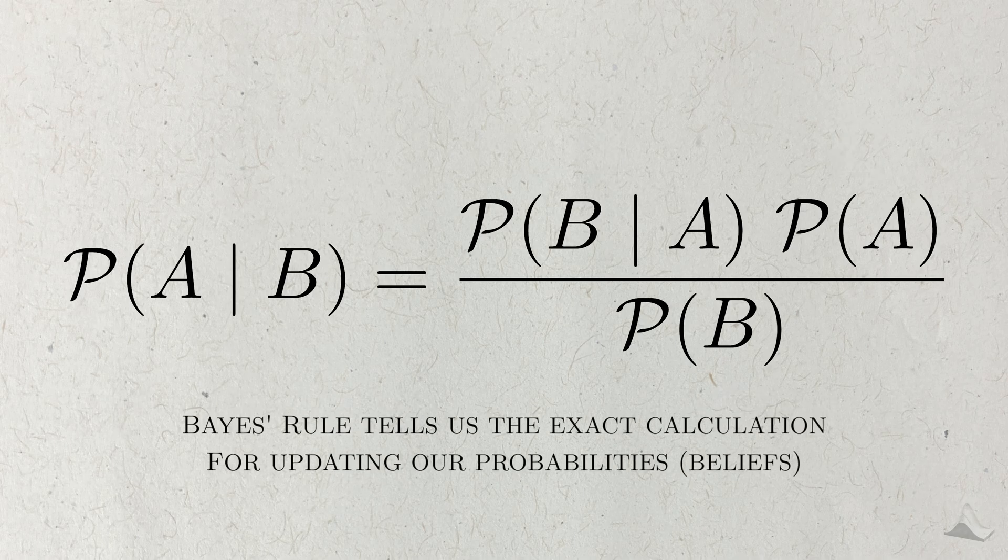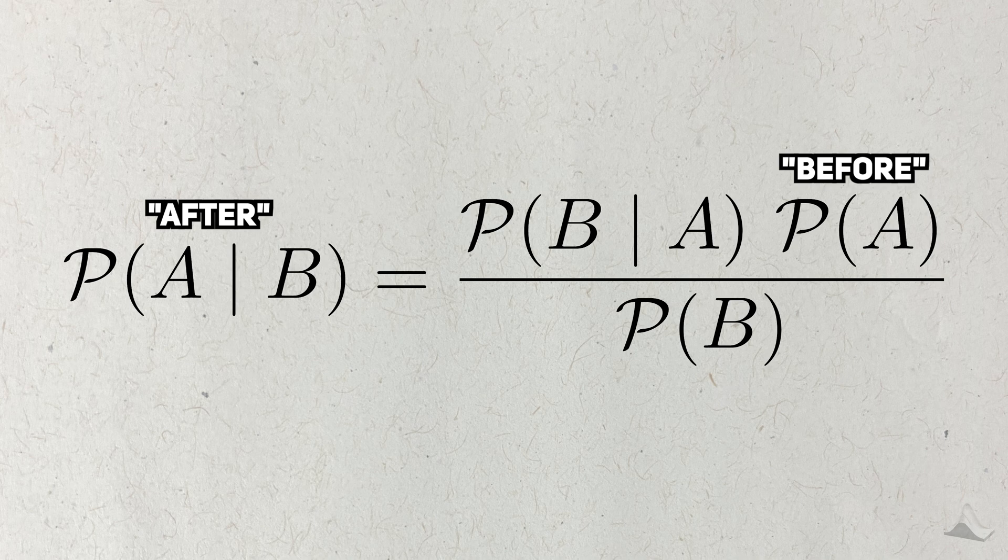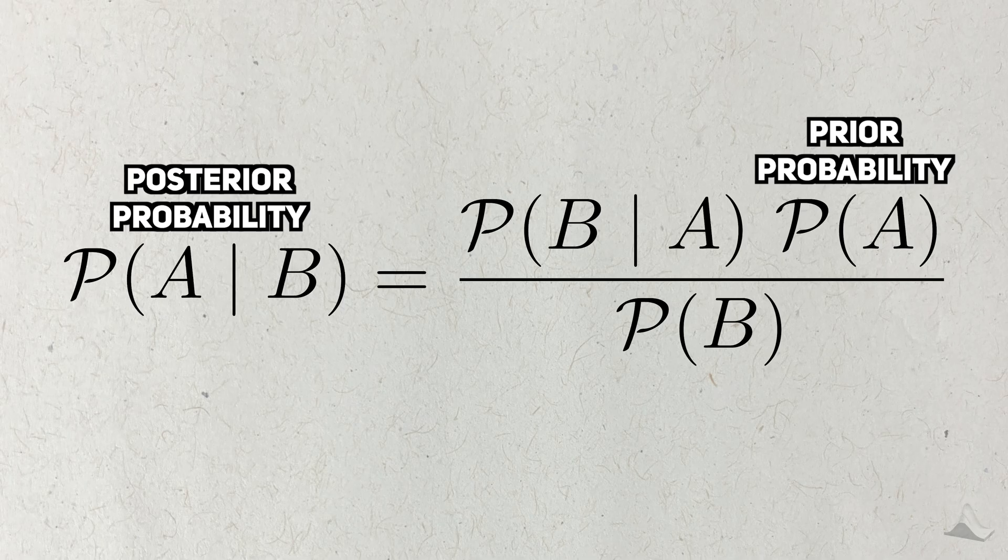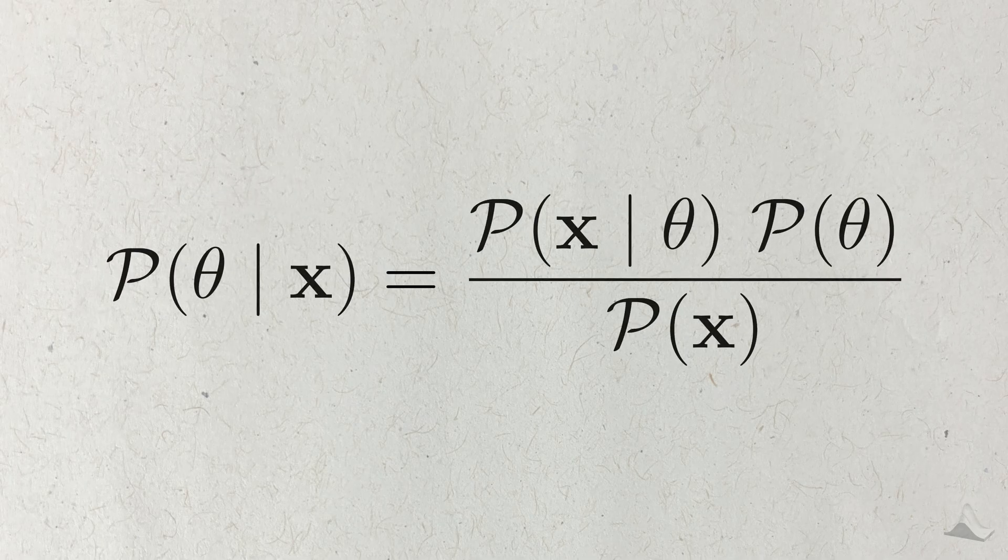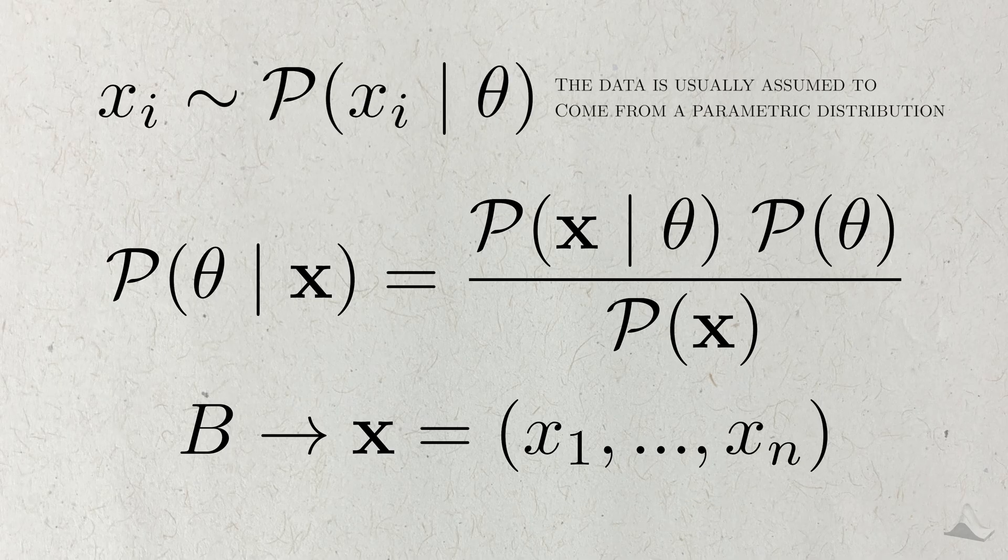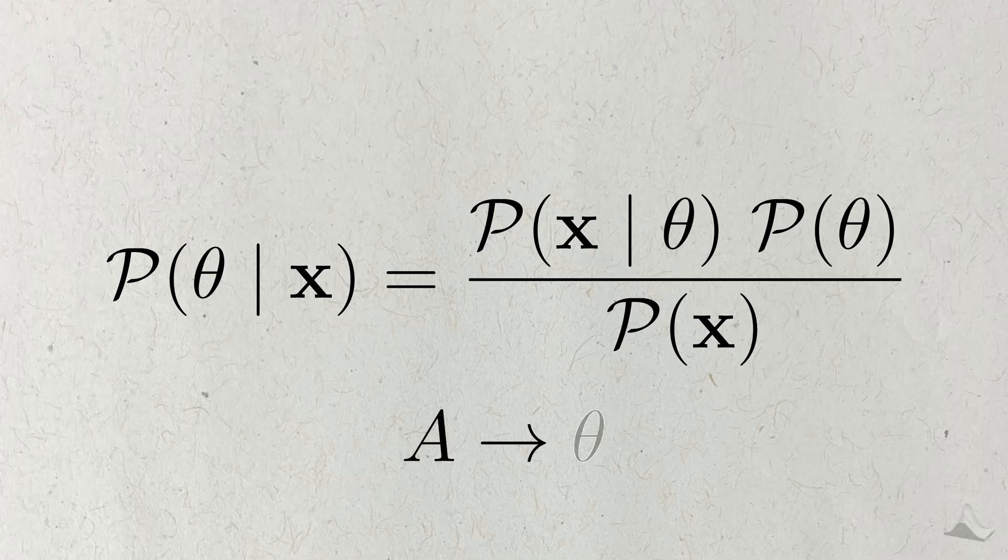Intuitively, Bayes' rule can be seen as a mechanism for updating our probabilities. If P(A) represents the plausibility of A before seeing B, then P(A|B) represents an updated plausibility after seeing it. P(A) is the prior probability, and P(A|B) is the posterior probability. With that in mind, we can bring in statistics. From this lens, the B event becomes the data we observe for an analysis. This data is usually assumed to come from a parametric distribution, like the normal or binomial, and I'll use theta to represent the general idea of a parameter, which replaces our A event.